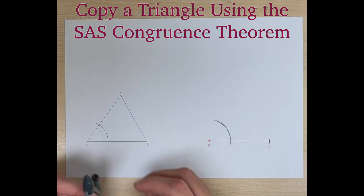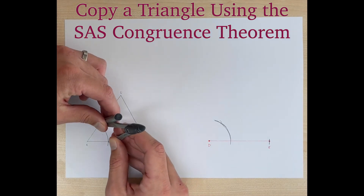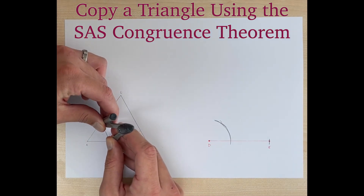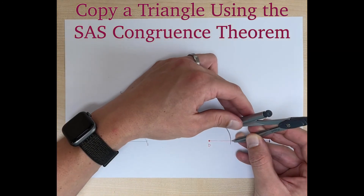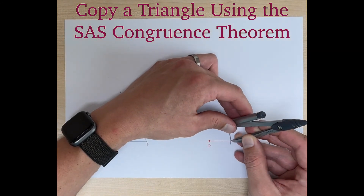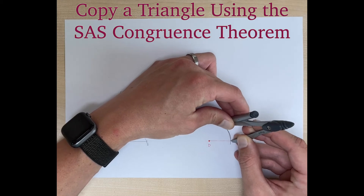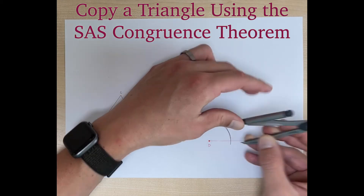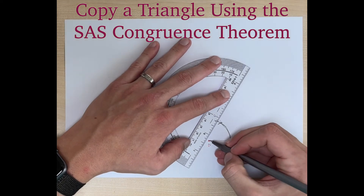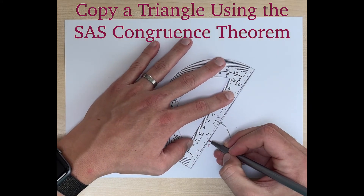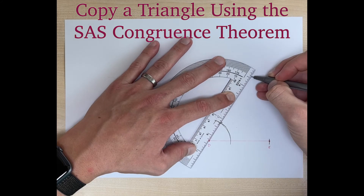Now in step two we're going to put the needle down at our intersection and make a little arc right here. We're going to keep our compass open the same amount and draw that arc over here. That gives us our intersection, where we start at point D and draw our line through that intersection.